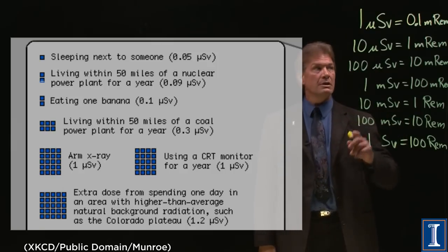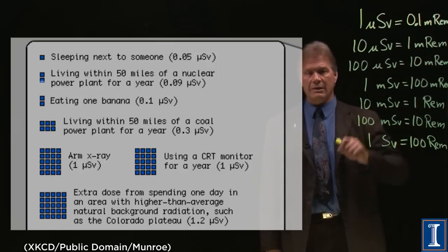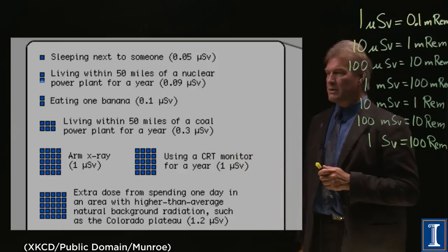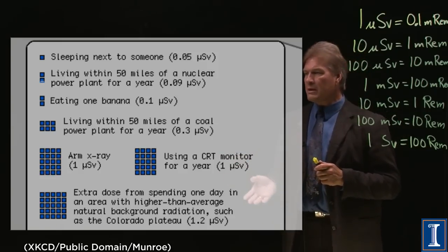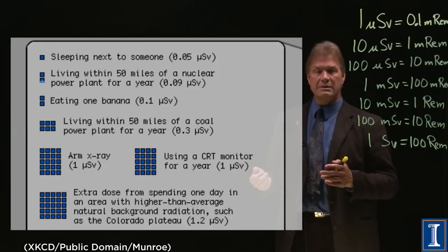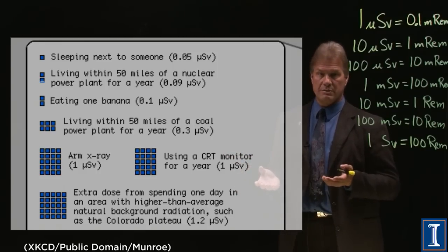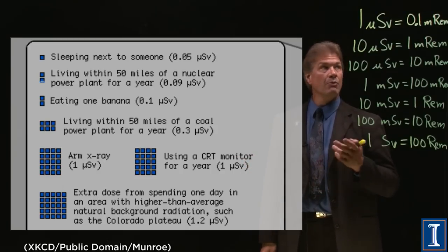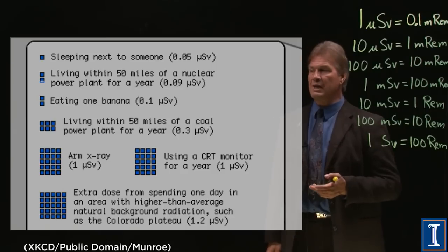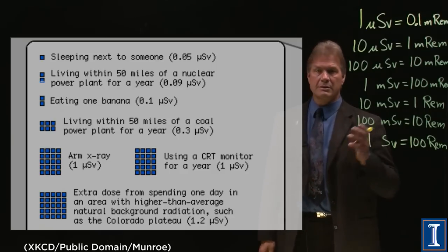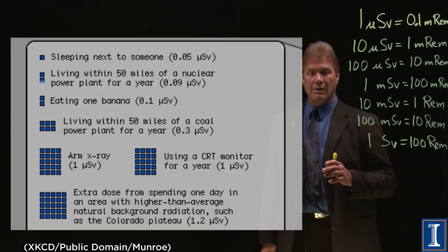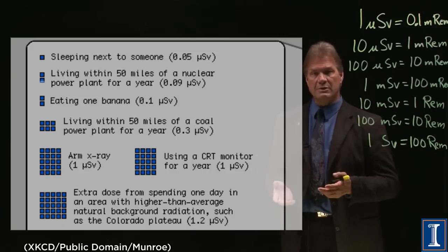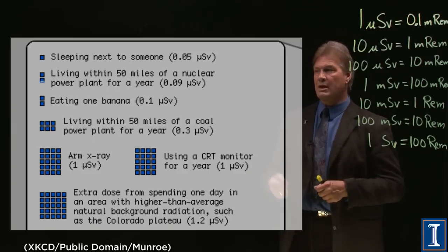Your natural dose is a millirem a day, just from nature. The last one on here is spending an extra day at some place that's in higher elevation. I talked about living in Colorado. 1.2 microsieverts a day. That will add up to something like 40-50 millirem extra per year, just because you have less atmosphere protecting you from the cosmic rays.